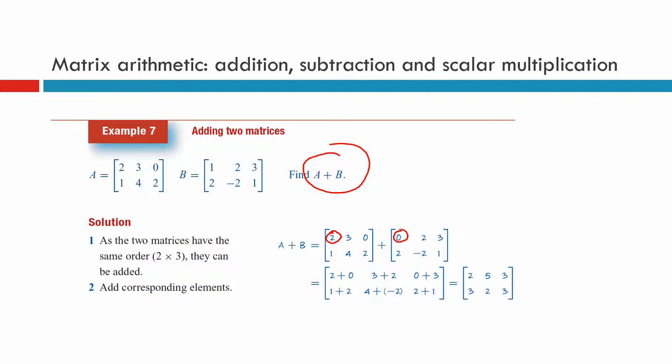There's those two matrices there. We're just going to put a little circle around them. Now we add these two. These two are in the same position. Two plus zero. We add them. We keep them in the same position. The next one is the three and the two is in the same position. We add those two. The next one is zero and three, so we add those two.